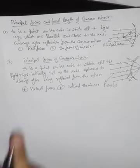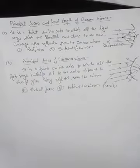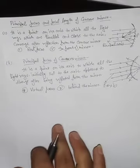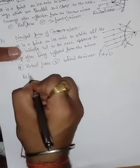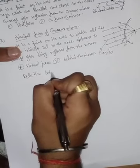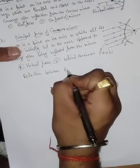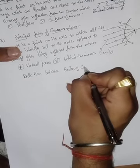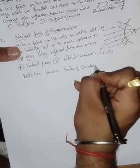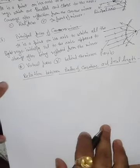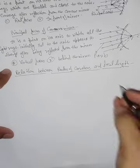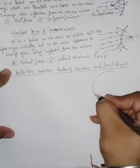So we have covered the principal focus of the concave mirror and principal focus of the convex mirror. Next is the relation between radius of curvature and focal length.